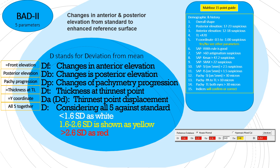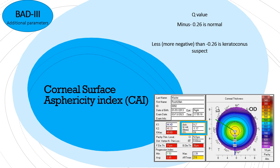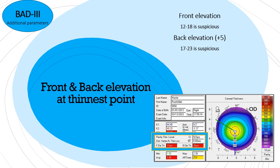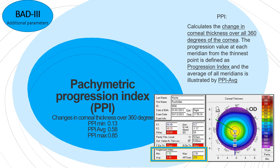Now let's move on to BADD3. It has different things in the top section: the Q value (already explained in shape parameters), front and back elevation, and the PPI — pachymetric progression index — with three parts: minimum, maximum, and average. Normal values for PPI are: minimum 0.13, average 0.58, and maximum 0.85. The one remaining component is the ARTmax, covered in the next slide.